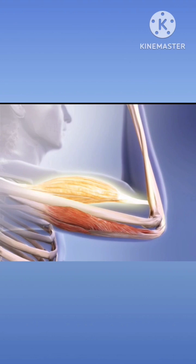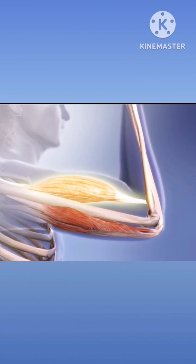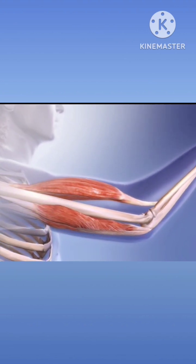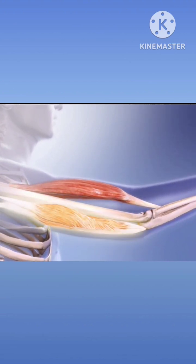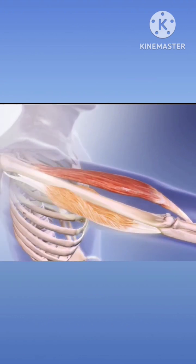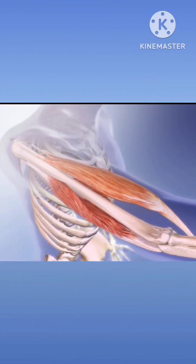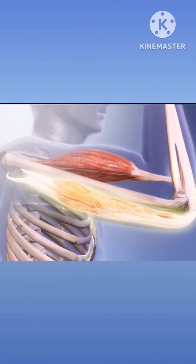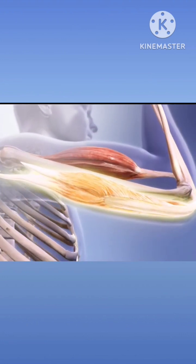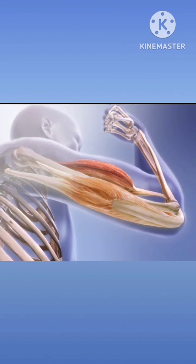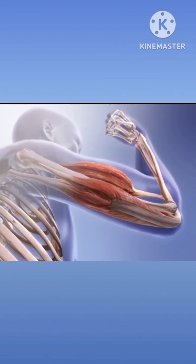A muscle that contracts to generate the main force of action is called the prime mover or agonist of that action. The muscle that performs an opposing action is called the antagonist. An agonist of elbow flexion is the muscle that contracts to bring the elbow joint into a flexed position, while the antagonists are the muscles that perform the opposite action, like elbow extension.